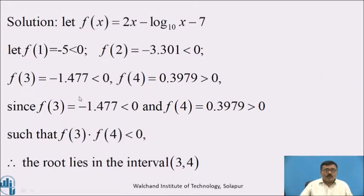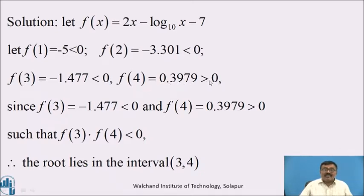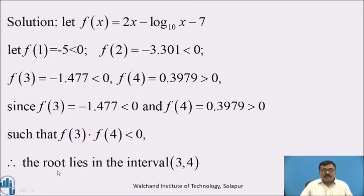We observe that f(1) = −5, which is less than 0, and f(2) = −3.301, which is also less than 0, and f(3) = −1.477, which is also less than 0, and f(4) = 0.3979, which is greater than 0. Since f(3) = −1.477 is negative and f(4) = 0.3979 is positive, such that f(3) × f(4) < 0. Therefore, the root lies in the interval [3, 4].